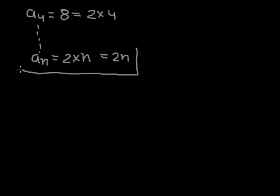Similarly, I can write a4 is equal to 2 into 4. So if I am going to proceed similarly, I would get the nth term would be something like 2 into n which is equal to 2n.